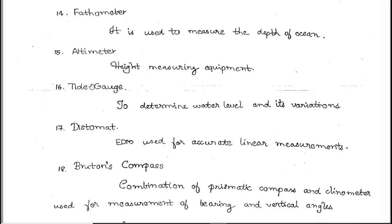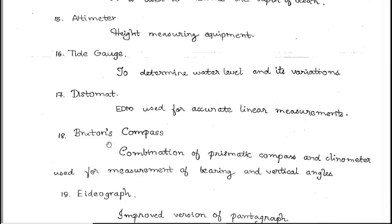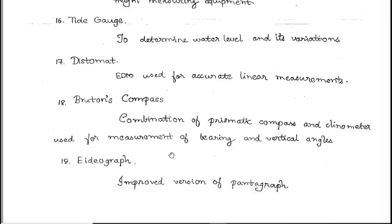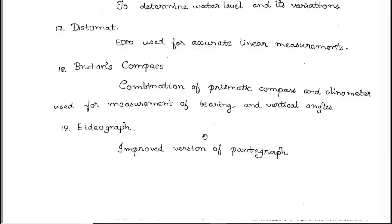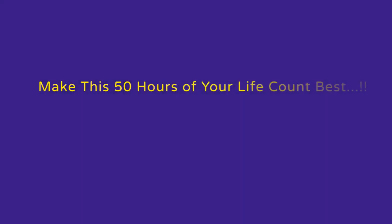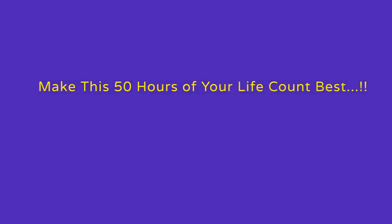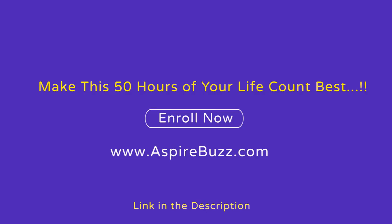Additional minor instruments include the altimeter, tidal gauges, distomat, Brunton's compass, and heliograph. The improved version of the pantograph is also among these minor instruments.